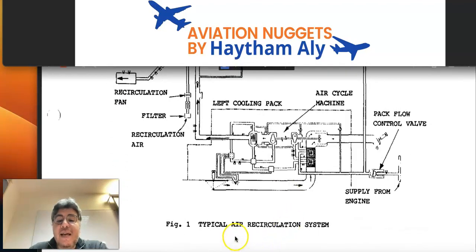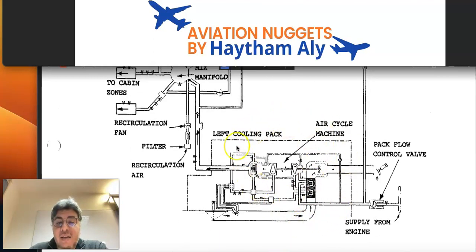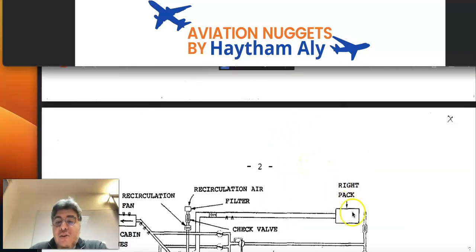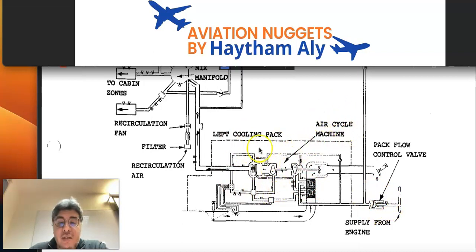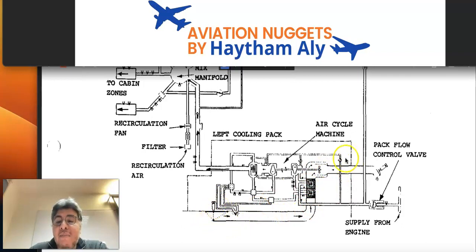Here is a typical air recirculation system schematic. We have a left pack and a right pack, both supplied from the engine or bleed system, controlled by the pack flow control valve. The pack is an air cycle machine — a turbo-compressor — with primary and secondary heat exchangers. The air coming from the engine or bleed system is cooled down by ram air via the ram air inlet and outlet flaps. The pack handles basic temperature regulation thanks to the air cycle machine and heat exchangers.